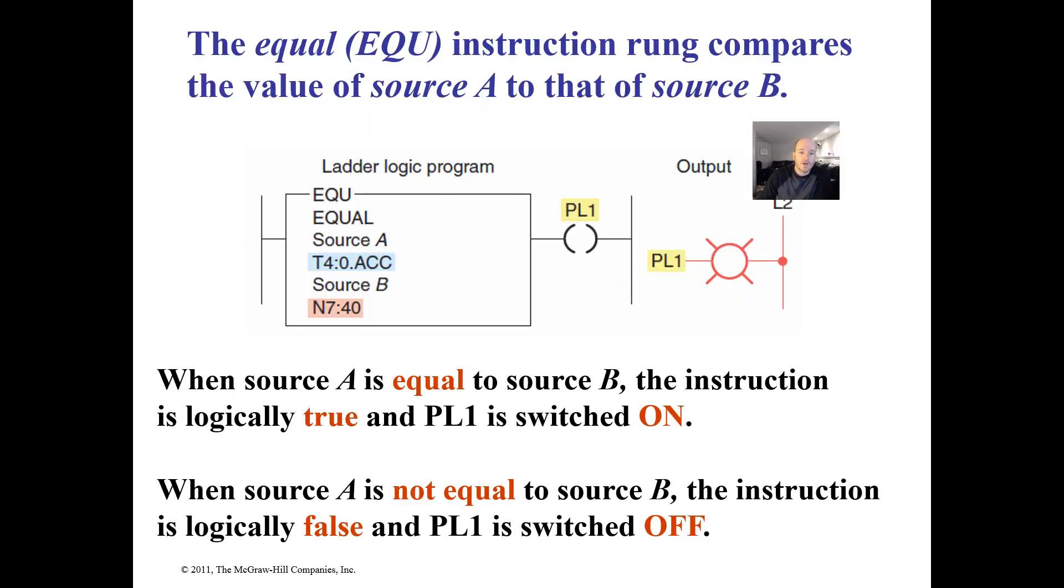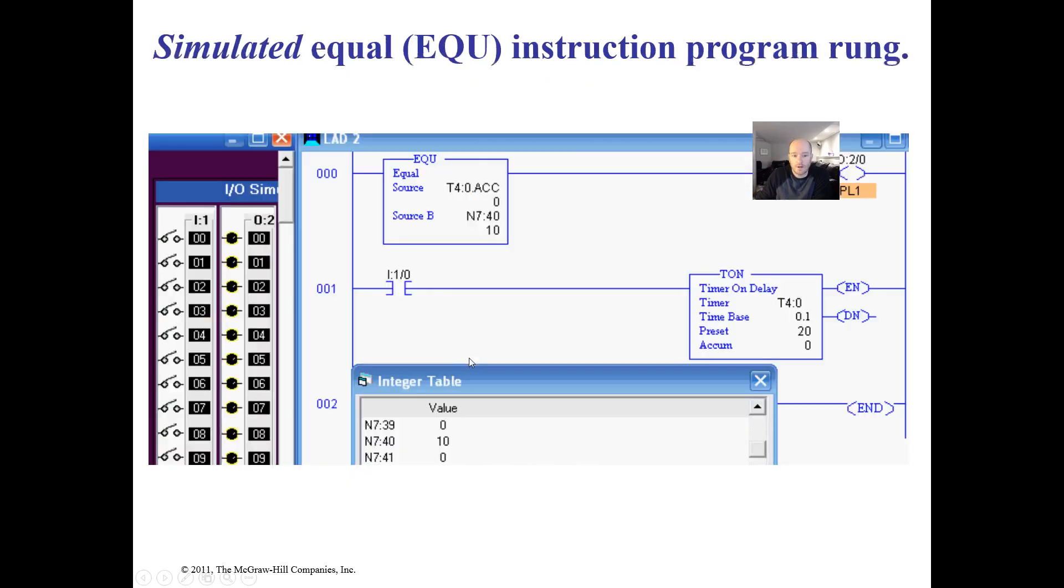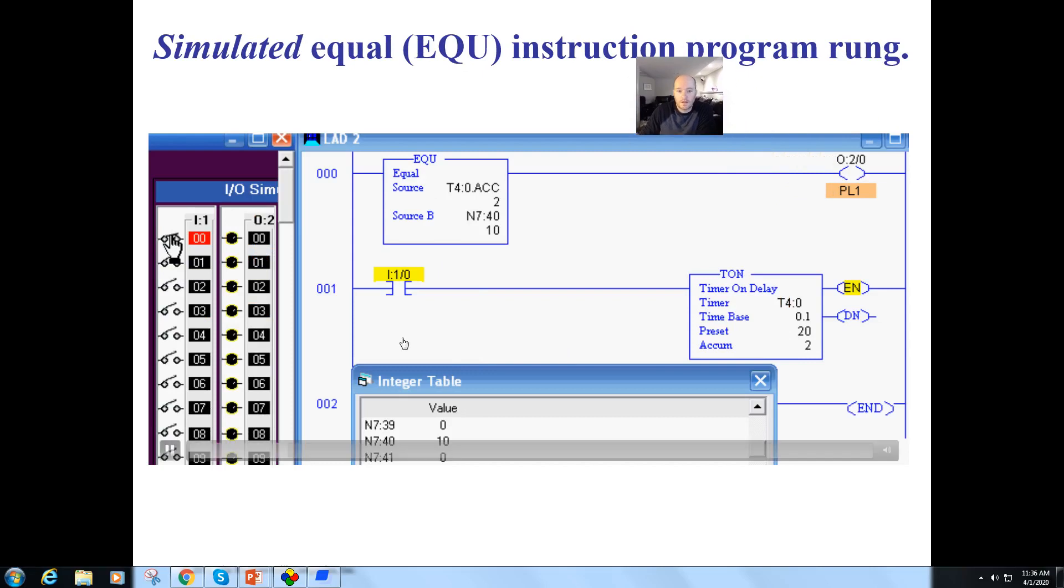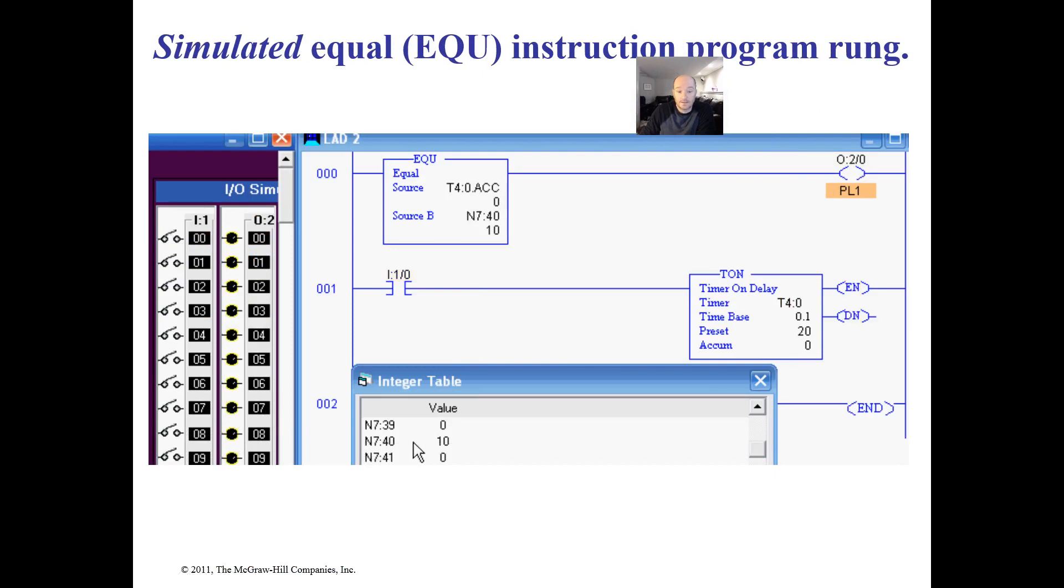How this works is pretty easy. We have a source A and a source B. In this case we're using a T4 accumulated, and for a source B we're using N7:40. Now let's take a look at how this works. When these are equal, the pilot light will come on. So they start it, it goes true. It went true for about one second.